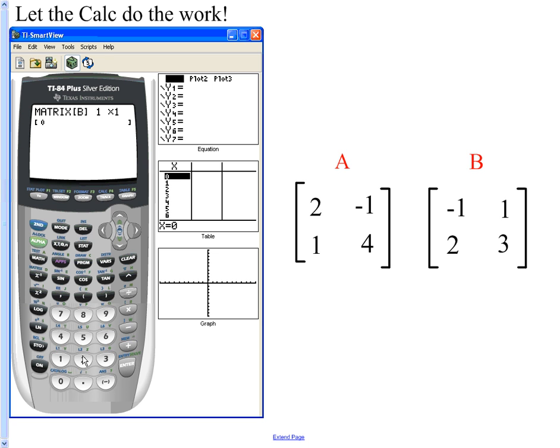Now I'm in B and I'm editing and I'm putting in as a two by two. And then the first one is a negative one and then a one, and then a two and then a three. Now at the bottom, do you see how it says two comma two equals three? That's saying row two, column two is three. Three is called the element.